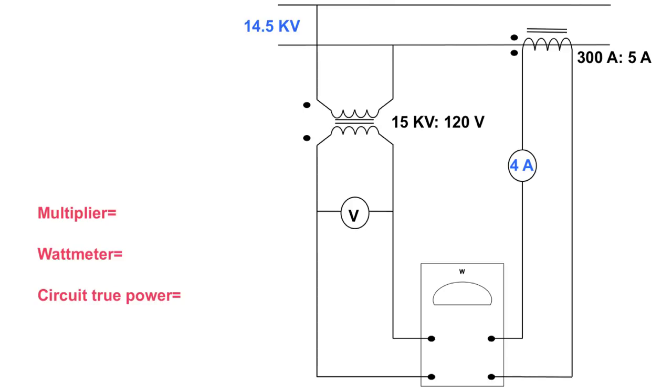Now here's our scenario. What we have here is a potential transformer, a PT, that is rated at 15 KV to 120 volts and we have a CT, a current transformer over here, that is rated 300 amps to 5 amps.